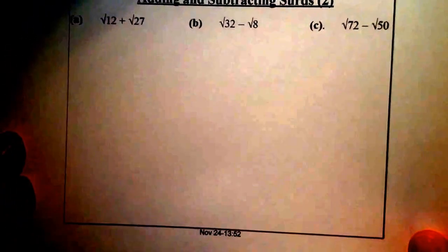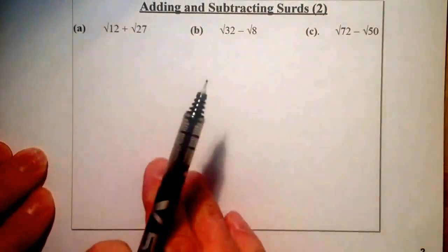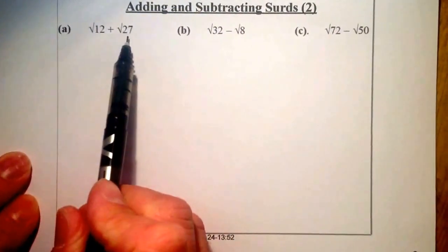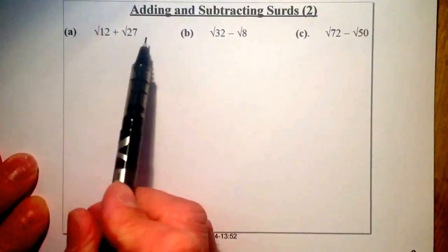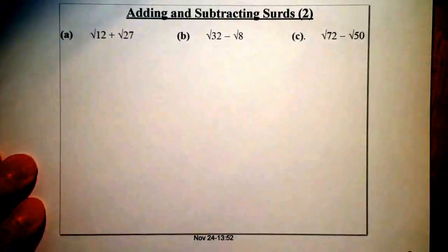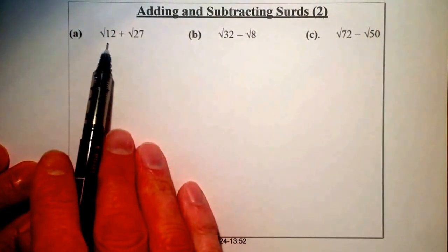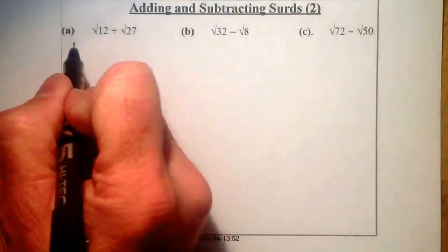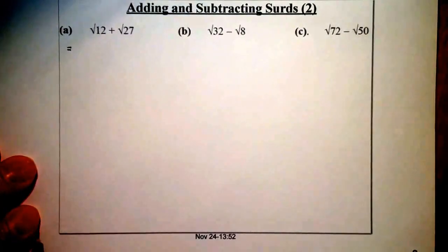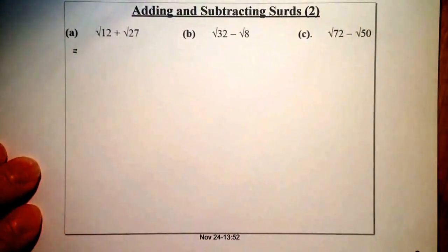Let's look at the next part of this type of work. We're going to be trying to add root twelve and root twenty-seven. The surds there are not the same, so I cannot add them directly. If you see a question like that, what you'd be looking to do is simplify the surds down, and then hopefully the surd number becomes the same so we can add or subtract. I'll think back to what I was doing when simplifying surds, and first try to simplify root twelve. We have to consider square numbers that multiply together to give twelve — a square number and another number.